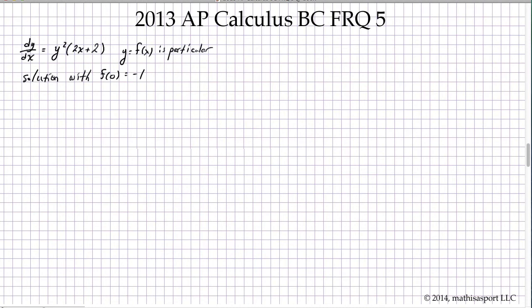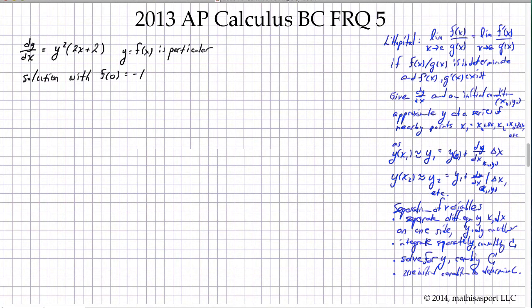We're given a differential equation as well as an initial condition for a particular solution, and we're asked to reason about that particular solution using L'Hôpital's rule, using the Euler approximation, and finally solving explicitly for the exact solution. In part a, we're asked to find the limit as x approaches 0 of f(x) + 1 over sine of x. Notice we don't know f(x) except at a particular point, which is the point in question.